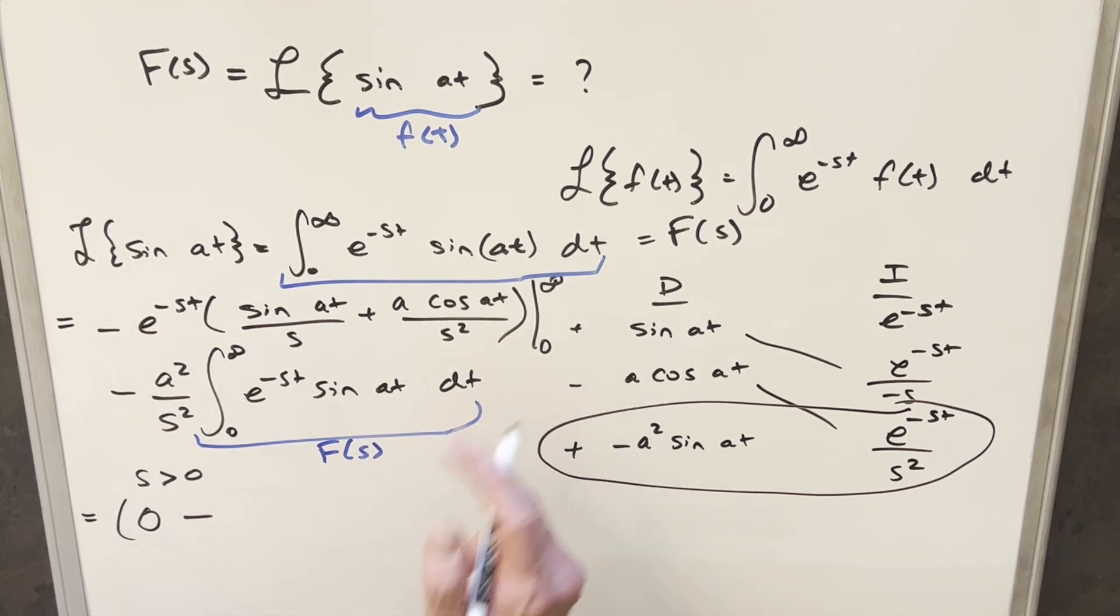But then evaluating at zero, we're going to need to be more careful with that one. So we're going to have minus in front, this is going to become e to the zero, then plugging a zero and sine at, we're going to end up with sine of zero over s plus a cosine of zero over s squared. And then let me bring down the rest of this just so we can keep track. So we're going to have our minus a squared, s squared, but I'm just going to write this as our F of s.